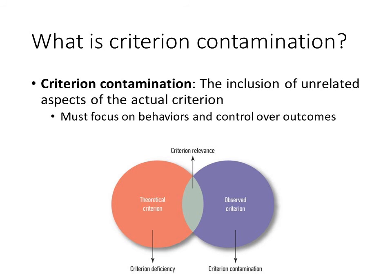Our criterion measures can also be contaminated — they might measure or represent behaviors or constructs that have nothing to do with job performance. When a measure is contaminated, it's gathering information that we don't need. Imagine we're hiring an administrative assistant and we require applicants to show us that they can lift heavy boxes, but lifting heavy boxes is not part of the job. Contamination can also occur because our measure isn't reliable, because the raters are biased, because test takers cheat, or due to some other phenomenon that we are not studying.